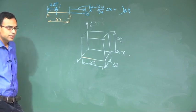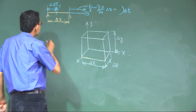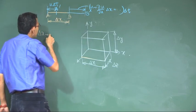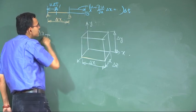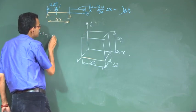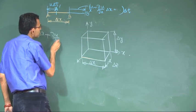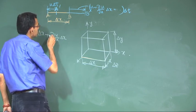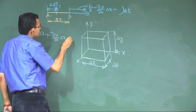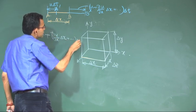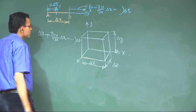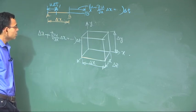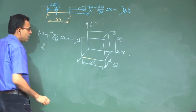The net change in length of delta x is the old delta x plus the difference. The new delta x equals the old delta x plus this difference. So what is the rate of strain along x?